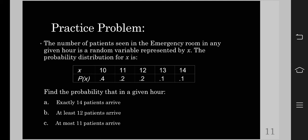Our task here is to find the probability that in a given hour: exactly 14 patients arrive. For letter B, at least 12 patients arrive. And for letter C, at most 11 patients arrive.